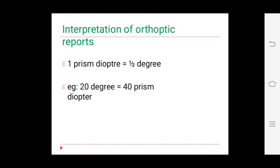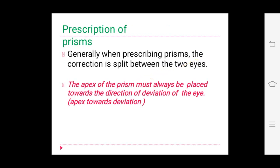Interpretation of orthoptic reports: one prism diopter equals half a degree (0.5°). For example, 20 degrees equals 40 prism diopters, and 40 prism diopters equals 20 degrees. When prescribing prisms, the correction is generally split between the two eyes. The apex of the prism must always be placed towards the direction of deviation of the eye — whether exo, eso, hyper, or hypo.